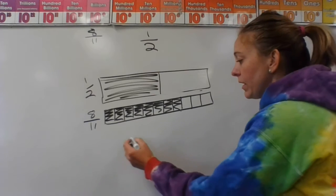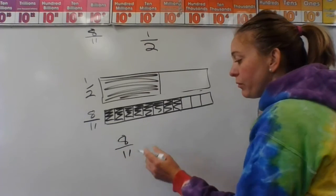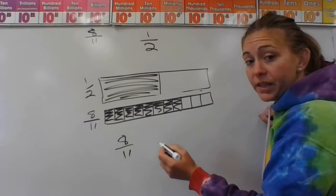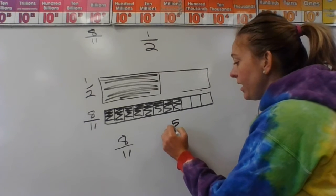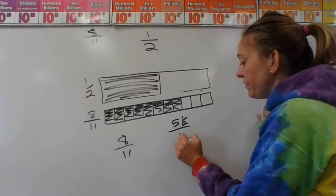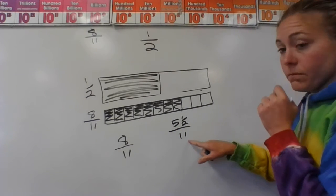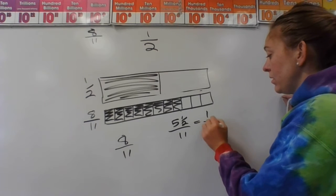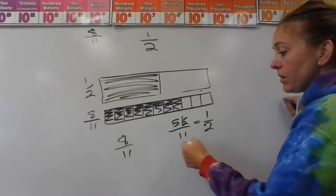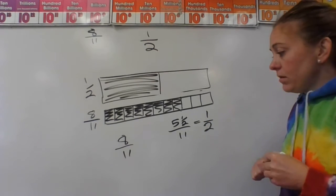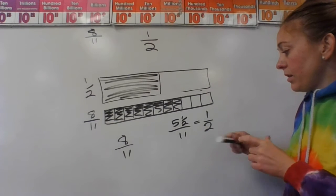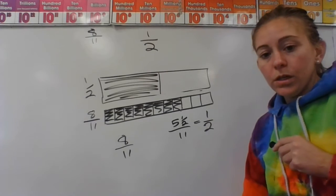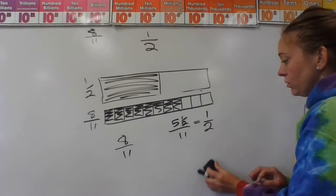All right, eight elevenths. One less than eleven is ten, and half of ten is five, so five and a half over eleven equals one half. Since eight is bigger than five, eight elevenths is bigger than one half.